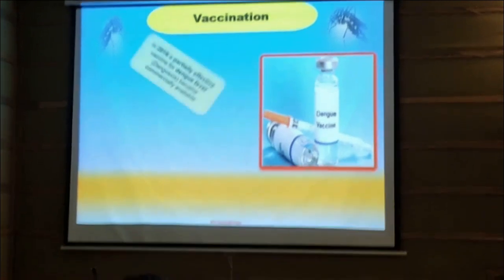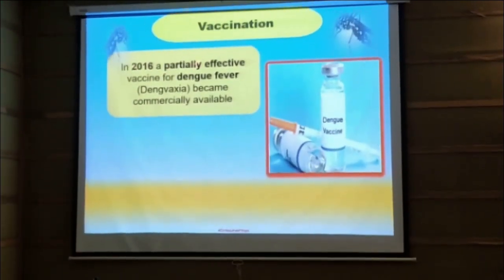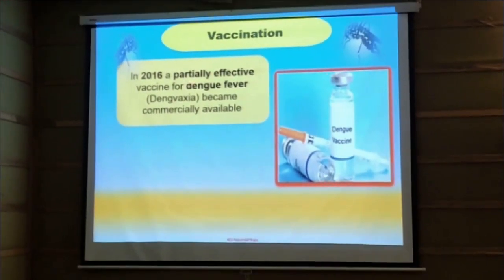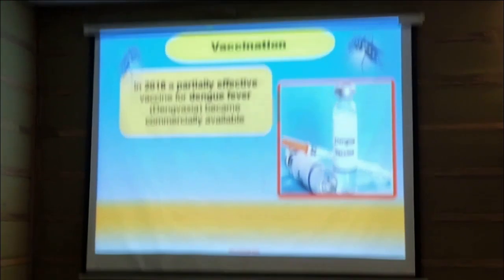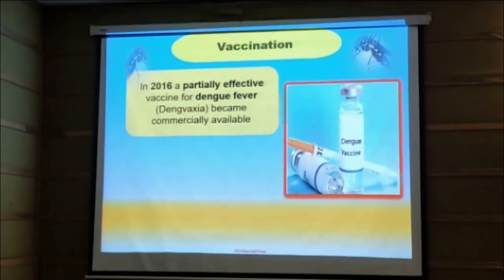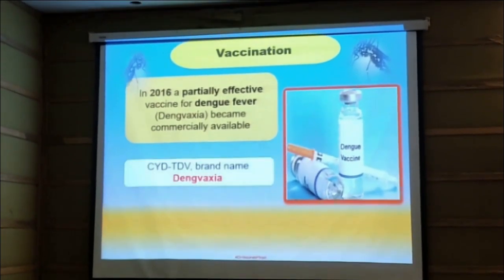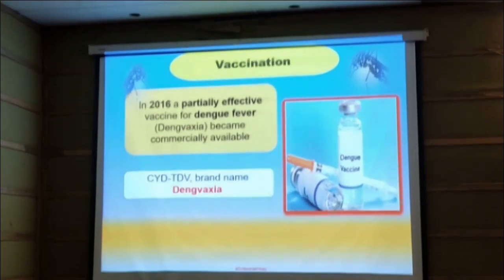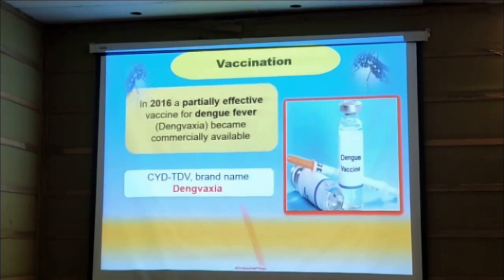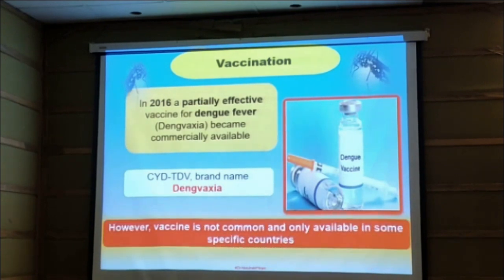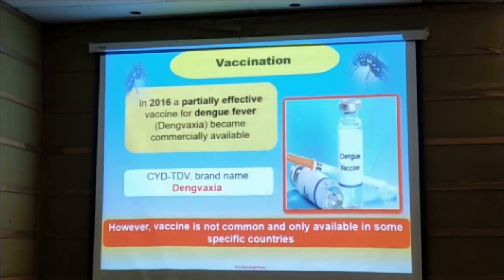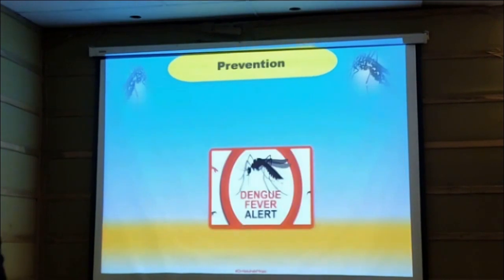Vaccination: In 2016, a partially effective vaccine for dengue virus became commercially available with the brand name Dengvaxia. However, the vaccine is not common and only available in some specific countries.